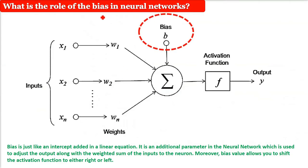What is a bias and what is the role of bias in neural networks? Bias is just like an intercept added to a linear equation: y equals mx plus c.